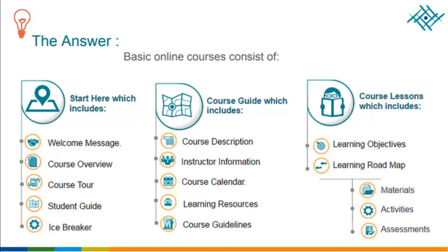The course guide includes instructor information, a course calendar, learning resources, and course guidelines. The course lessons include the learning objectives, and you have to provide what we call a learning roadmap. Essentially, each lesson will include materials, activities, and assessment. You have to provide material for each lesson, an activity for each lesson, and an assessment for each lesson.